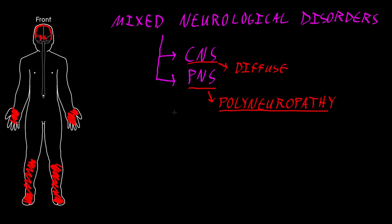Several types of pathology may cause mixed central and peripheral neurological disorders. These can include disorders in the categories of genetic, idiopathic, metabolic, infectious, nutritional, and toxic disorders. So these can be fairly complex disorders to try to diagnose.